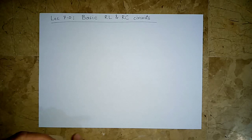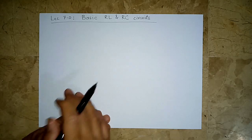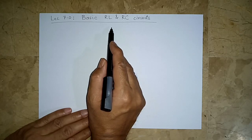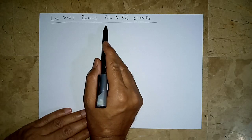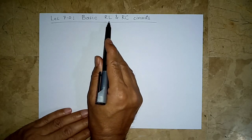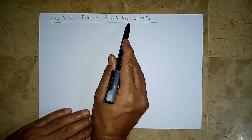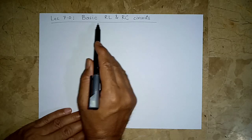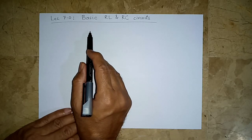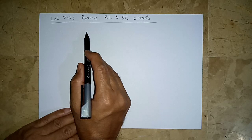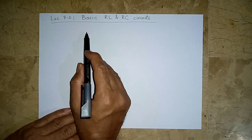Let us move forward in the course. After learning about the nature of the inductor and capacitor, let us come to studying circuits that employ them. We are going to start with very simple circuits: a basic RL circuit which will have nothing except one R and one L, and a basic RC circuit. There may or may not be a source in that. It's very important to develop concepts on simplistic circuits.